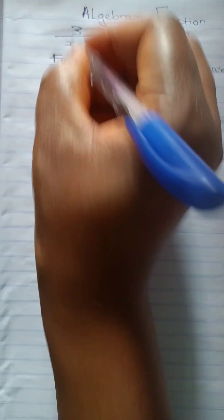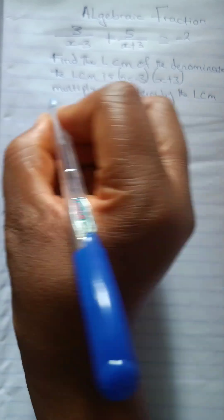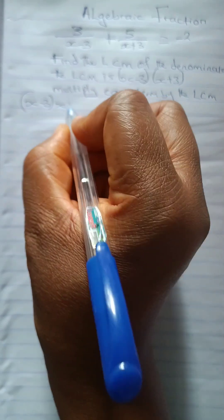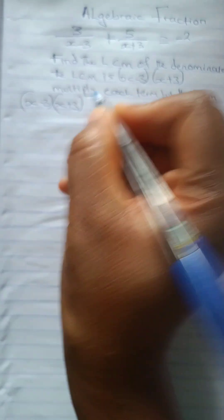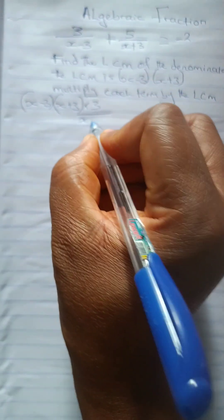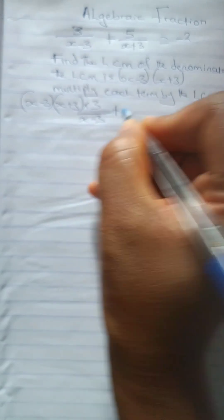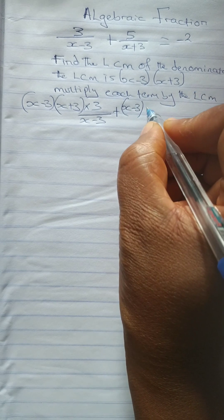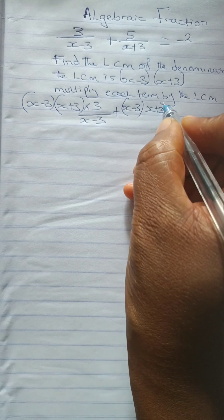So we can get rid of the fractions. So this is what I mean. This is the LCM. We're multiplying each by the LCM. So the LCM is x minus 3, x plus 3 times this 3 over x minus 3 plus x minus 3. The LCM x plus 3 times this 5 over x plus 3 equal to